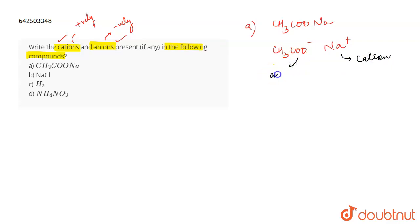Coming on to b, which is NaCl. In NaCl, Na is plus one and Cl is minus one. This means that Cl negative is an anion because it is negatively charged and Na plus is the cation.